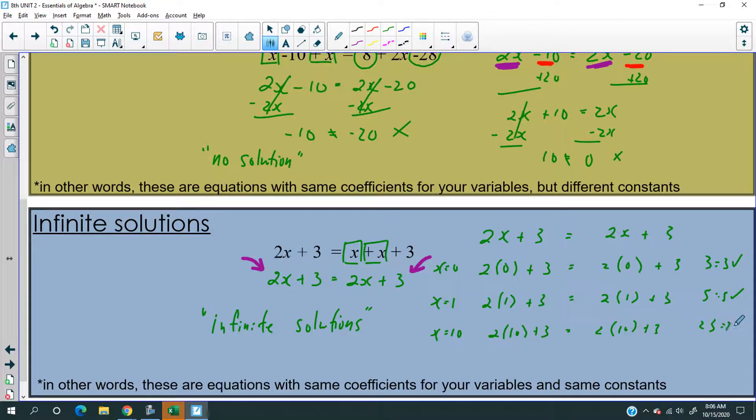So 2 times 10 plus 3. 2 times 10 plus 3. That's 23. Okay. Nothing surprising. But look, no matter where we go with the number for the letter x, no matter where we go with the substitution, it follows us. So it's like someone who's following you no matter where you go.